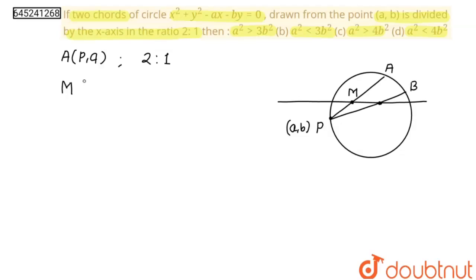By section formula, this is 2, this is 1. So we can write: M = (2p + a)/3 for the x-coordinate.